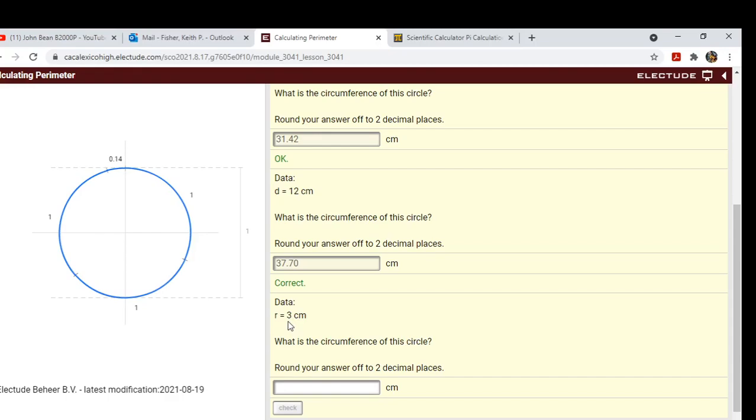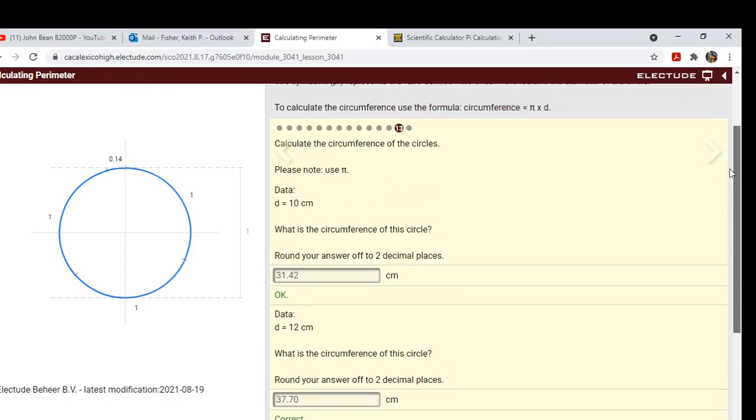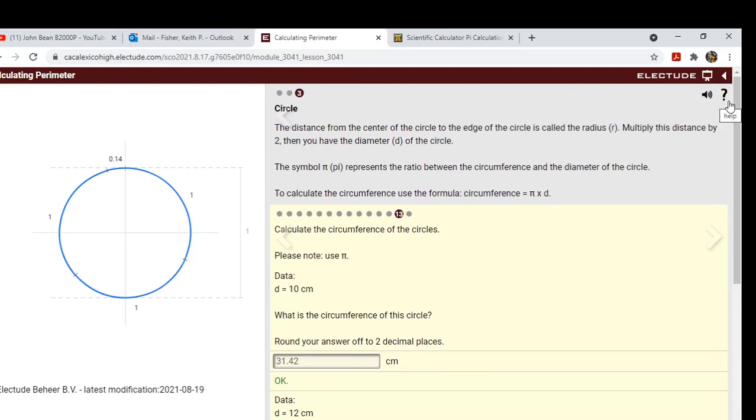Okay, so hopefully you guys got that. That ends the lesson on calculating perimeter and the circumference of a circle. If you have more questions, ask me in class.